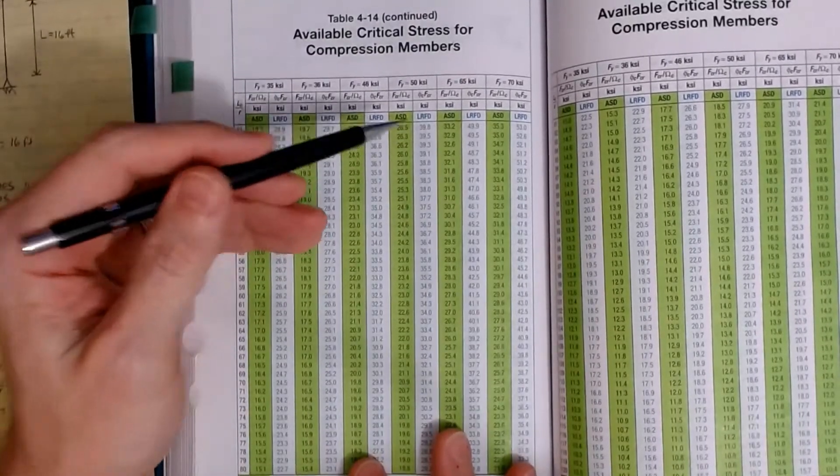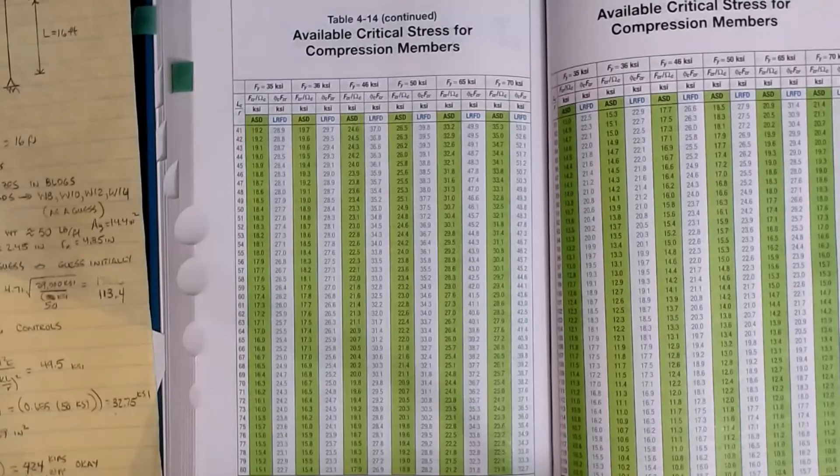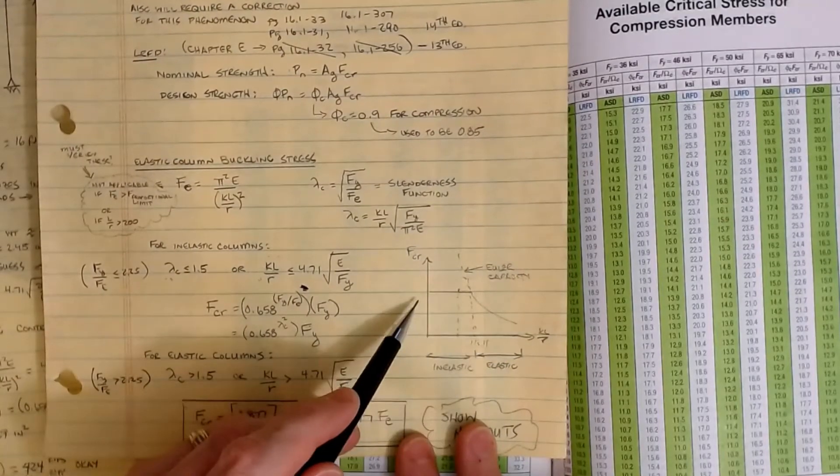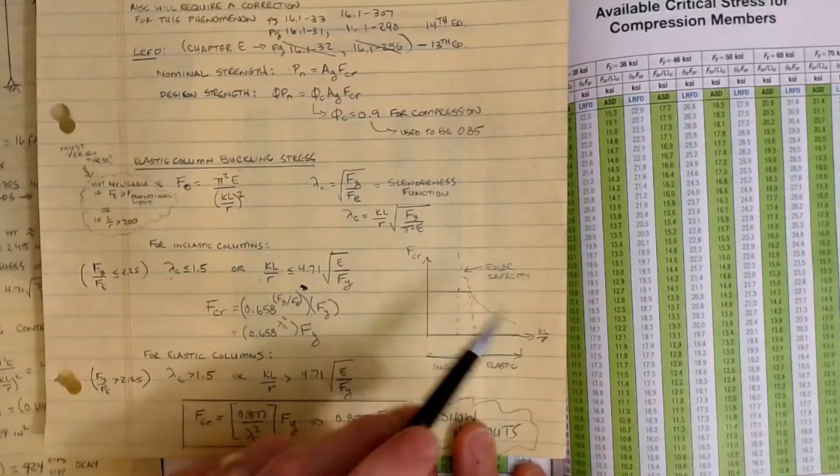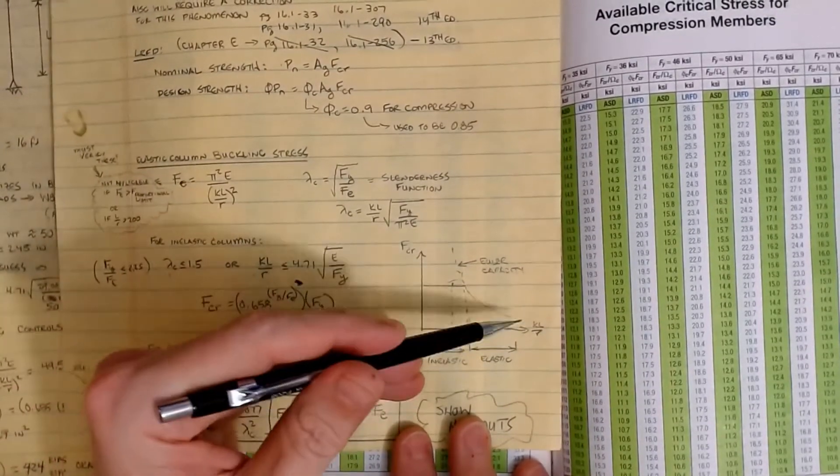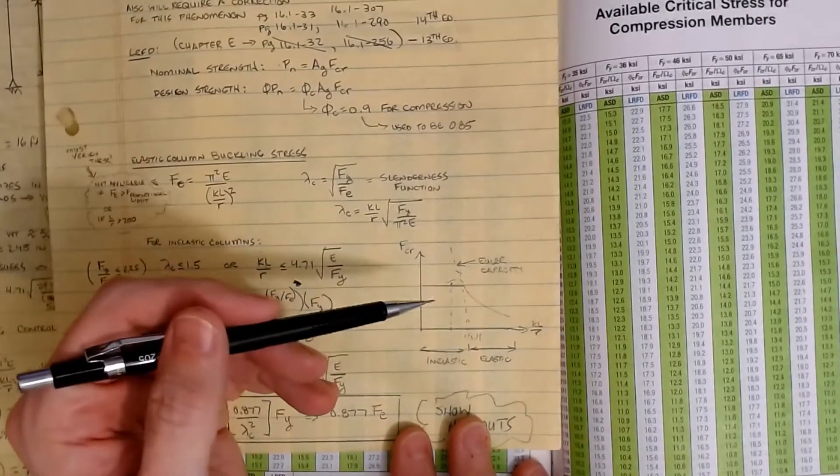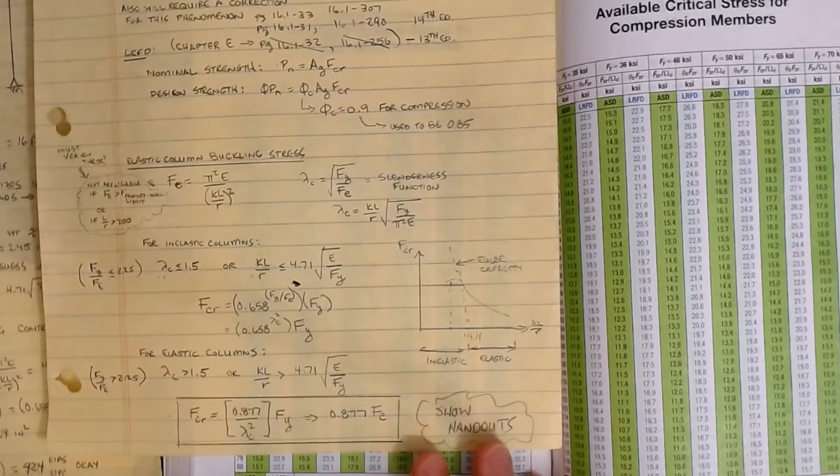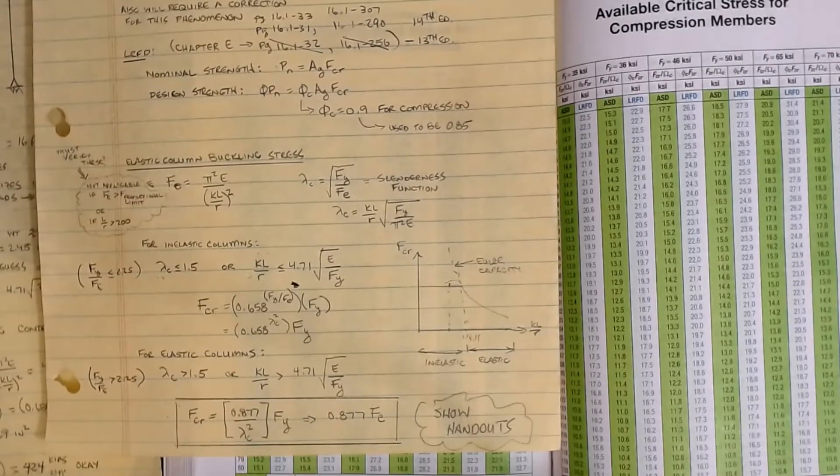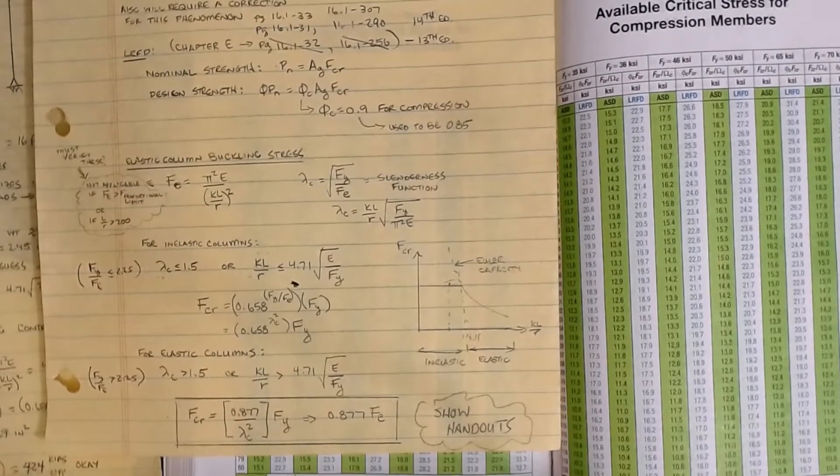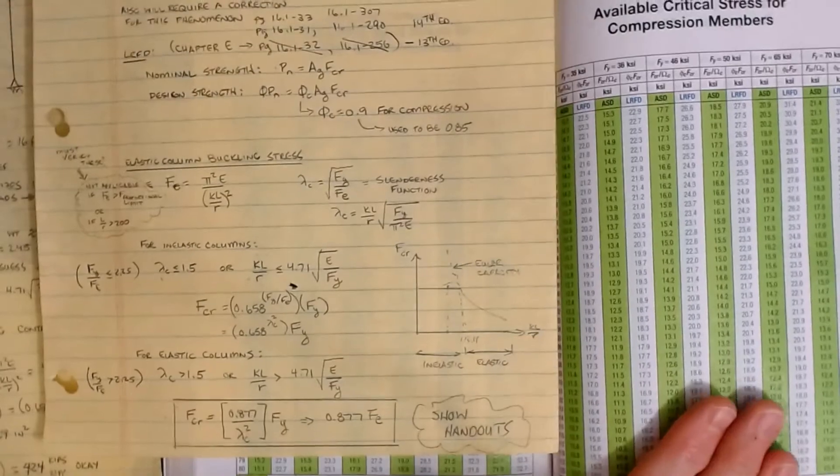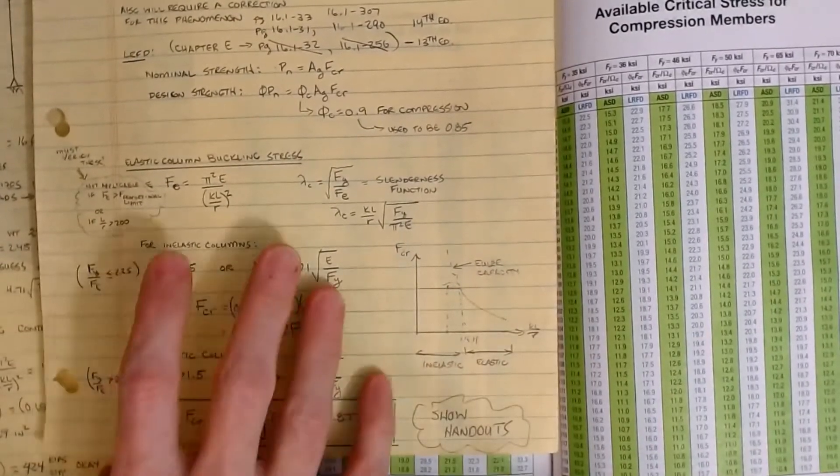This table, if you plot out every value of KL over R versus FCR as we talked about in that curve or the general equation, if you plot out every KL over R value this table right here will plot that curve, inelastic region and elastic region. I don't have to worry about any of the checks, I can jump straight into the formula and we're good to go. This is a really super handy table. For years it was in the allowable stress design methodology books and even when I was learning LRFD as a practicing engineer I had that table from the other design methodology because it was so easy to use. Column designs are super easy with this table.